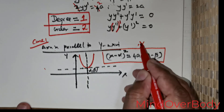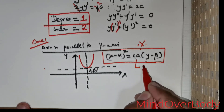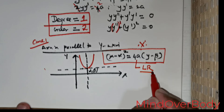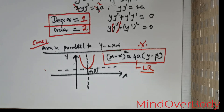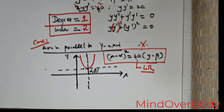These are two important families of parabolas, which are critical for problem solving. We will use (x − α)² = 4a(y − β) as the required family of curves for this question.